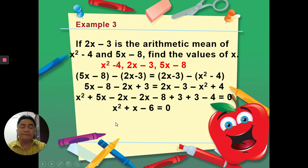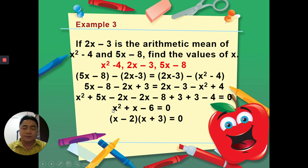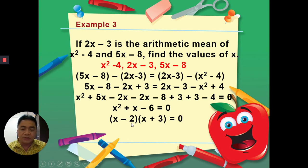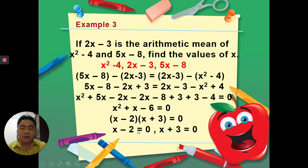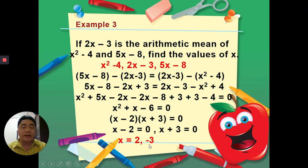We factor x² + x − 6. We need two numbers multiplying to −6 and adding to +1: those are +3 and −2, since 3 × (−2) = −6 and −2x + 3x = x. So (x − 2)(x + 3) = 0. Therefore x = 2 and x = −3. Those are the values of x for example number three. Any questions? Thank you very much, and now we have our activity.